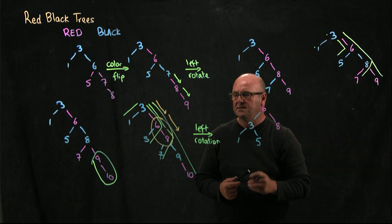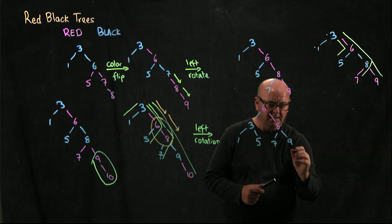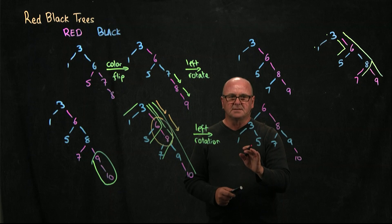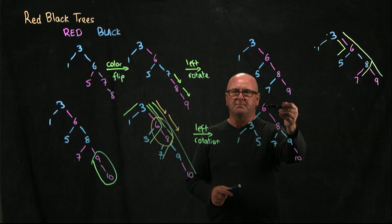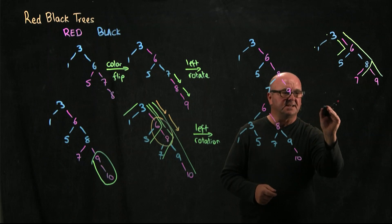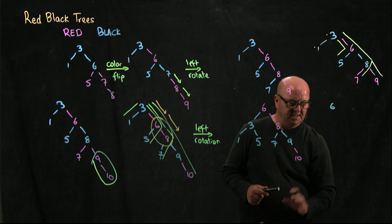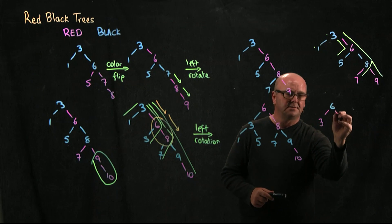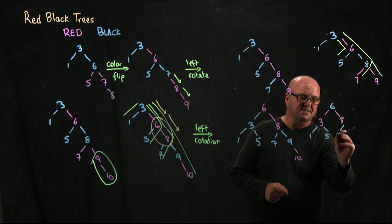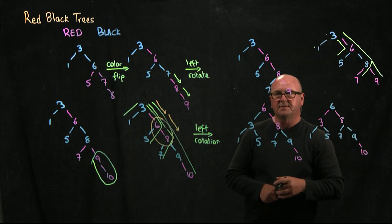The 6 becomes the root, and the 3 and the 1. The 5, which is the 6's left child, becomes the 3's right child. Then we have the 8, the 7, the 9, and the 10.